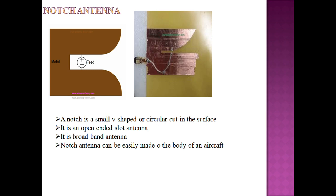The notch antenna gets its name because a flat sheet is cut at the corner with a V or circular shape. It is also called an open-ended slot antenna. It is a broadband antenna that can be made very easily and is used in the body of aircraft. This concludes the brief introduction of HF, VHF, and UHF antennas — an important chapter. Feel free to ask any doubts in the comments section.